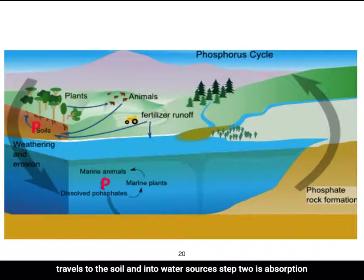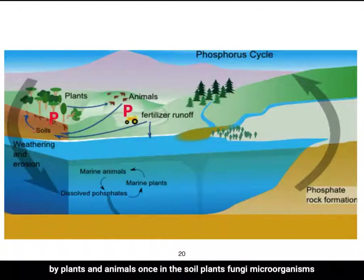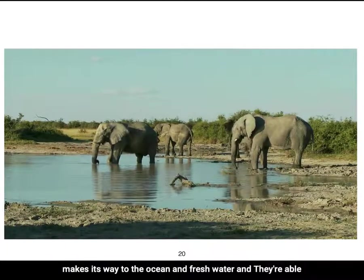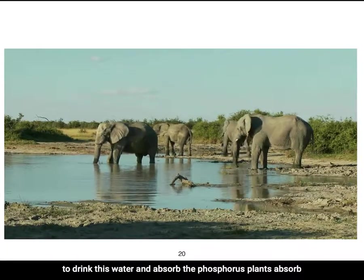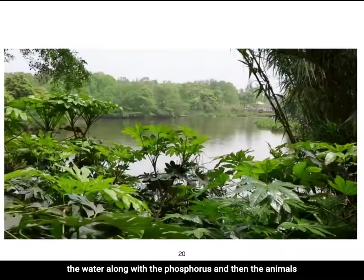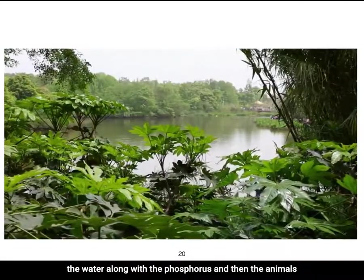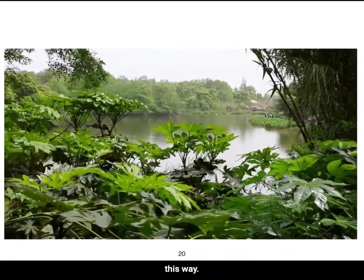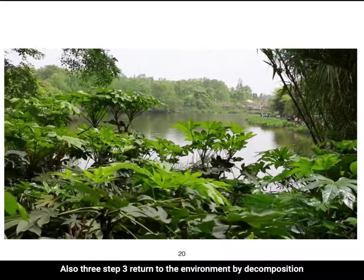Step 2 — Absorption by plants and animals: Once in the soil, plants, fungi, and micro-organisms are able to absorb phosphorus and grow. Some phosphorus also makes its way to the ocean and fresh water, where animals drink and absorb it. Plants absorb water along with the phosphorus, and then animals eat the plants, so phosphorus moves into the animal that way as well.